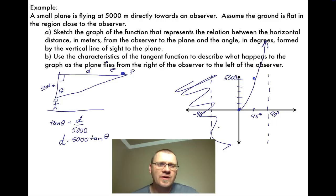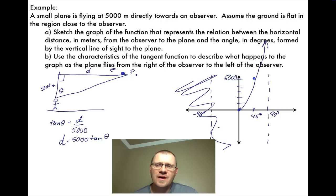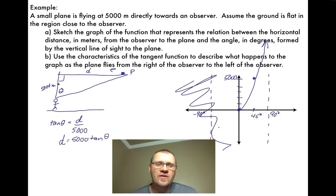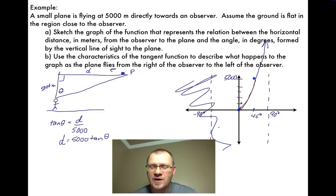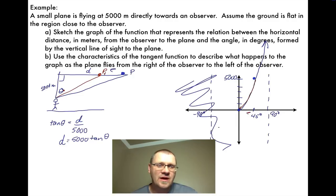So here's our sketch of the tan function. The next question says: use the characteristics of the tangent function to describe what happens as the plane flies from the right of the observer to the left. There is a maximum height of 5,000 meters. As the plane moves towards the observer, this angle keeps on getting smaller and smaller — represented on the graph by the angle decreasing. On the picture, if the plane moves closer, that angle is now smaller than it was before.